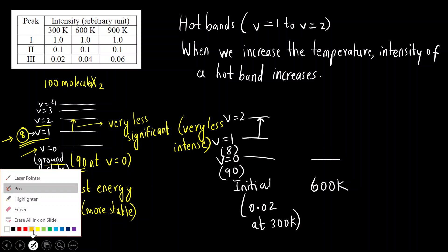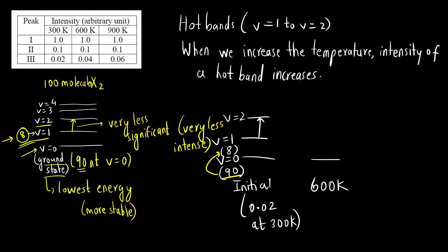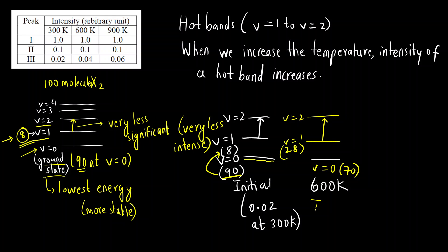If I increase the temperature to 600 Kelvin, some of the molecules at V=0 will get excited and their energy will be close to V=1. So V=0 now has only 70 molecules, and 20 molecules have moved up to V=1. The intensity of the transition from V=1 to V=2 will increase on increasing the temperature — meaning population has increased — and intensity increases from 0.02 to 0.04.